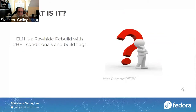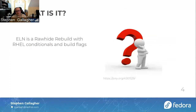ELN is also essentially the point from which we will fork the next version of CentOS Stream, which is the open environment where Red Hat will do development for Red Hat Enterprise Linux. For RHEL 9, we broke inheritance at the final freeze of Fedora 34, giving us a stable fixed set of commits that we could move into the CentOS Stream repositories.